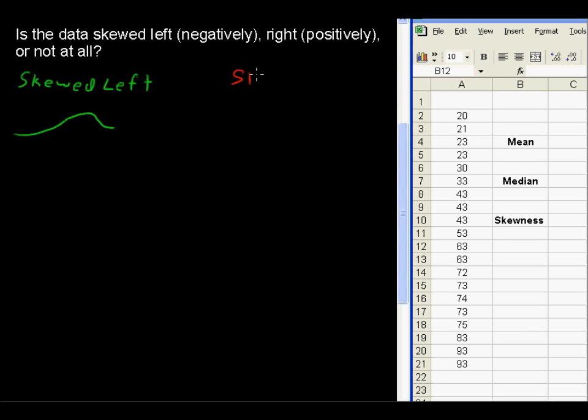Something that would be skewed right, then, kind of looks like a mirror of that. So I'll just draw a little picture for you. Most of the data is bulked up here, but then something is pulling it over to the right. You've got a few high values, so this would be skewed positively, or to the right.